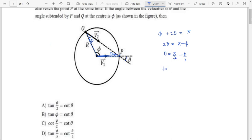So now you can take tan on both sides. So tan theta is equals to tan of pi by 2 minus phi by 2. So which is nothing but cot of phi by 2.